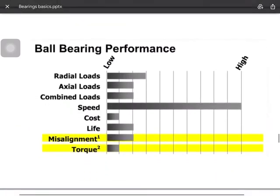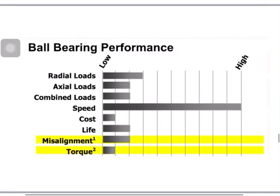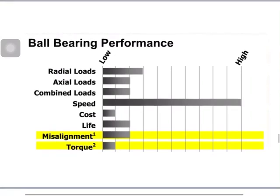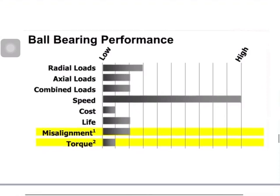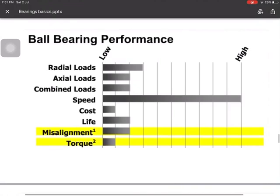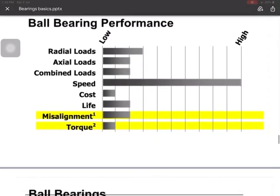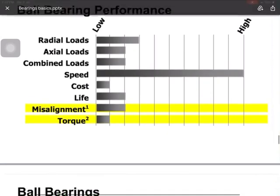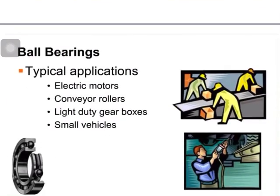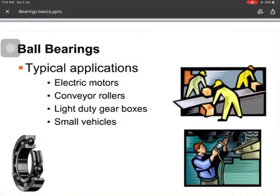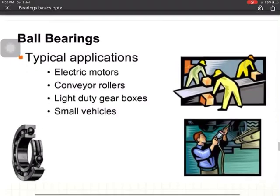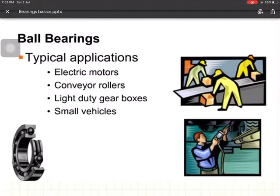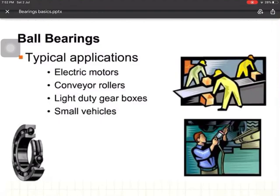Ball bearings can rotate at very high speeds. They are used for low radial load and low axial load, and can handle combined loads. Cost is low and life is medium, but they cannot take much misalignment and torque carrying capacity is also low. Ball bearings are generally used in electrical motors and small conveyors. For larger conveyors we use spherical roller bearings, and ball bearings are also used in light duty gearboxes and some small vehicles.